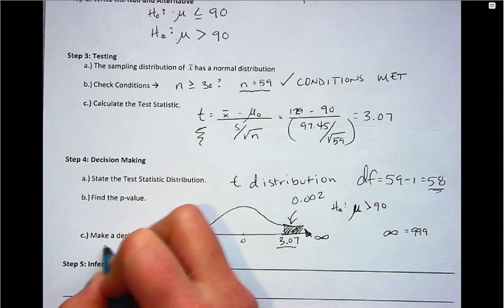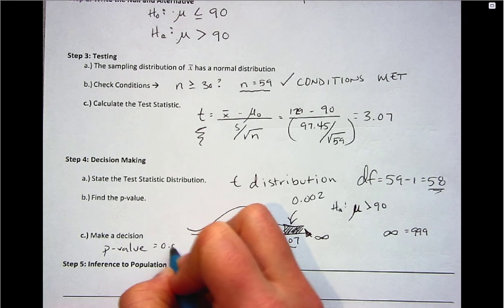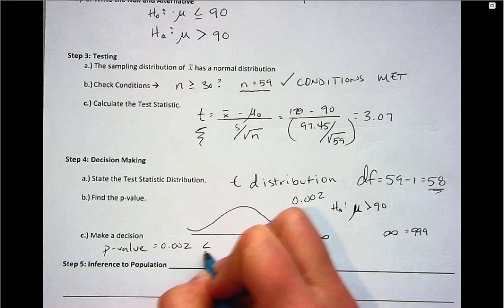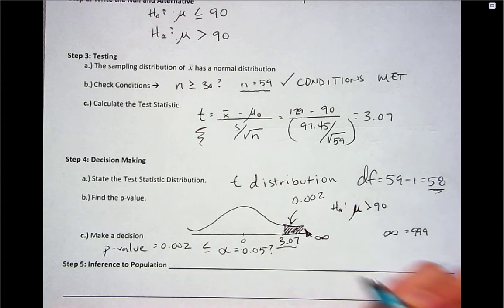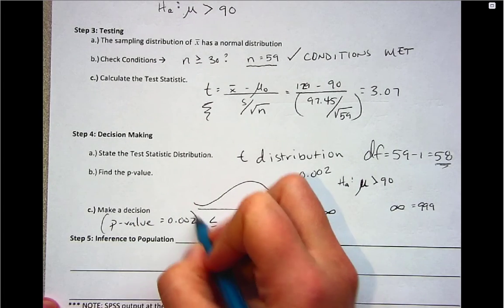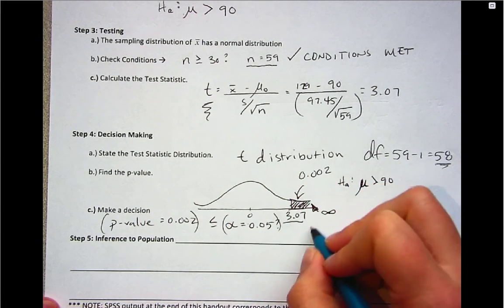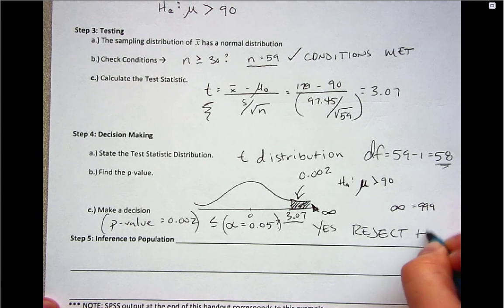So with a p-value that's that small, we want to know if it's less than alpha, which is equal to 0.05. So here is the p-value less than alpha. Well that is true, so we'll make the decision to reject the null.